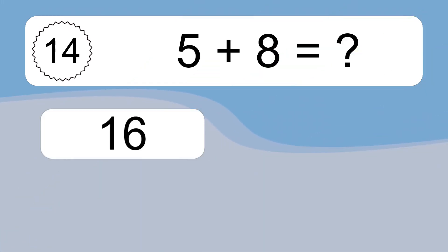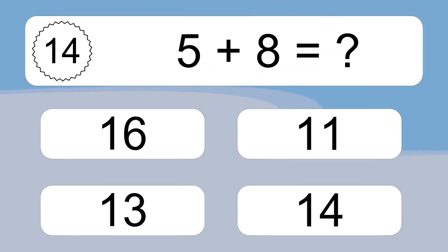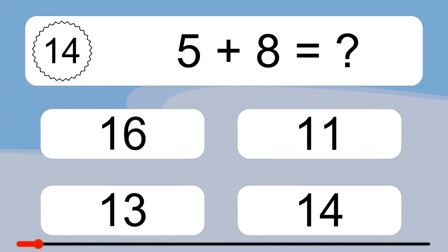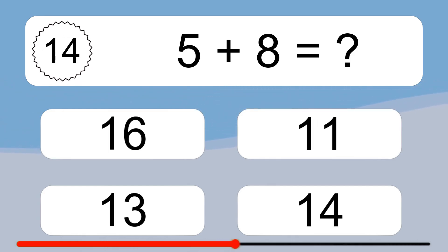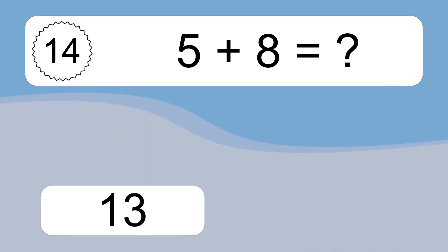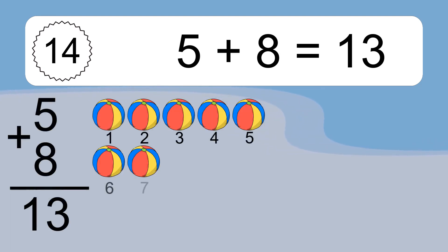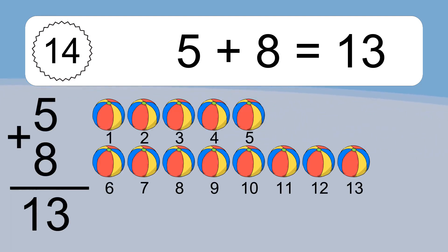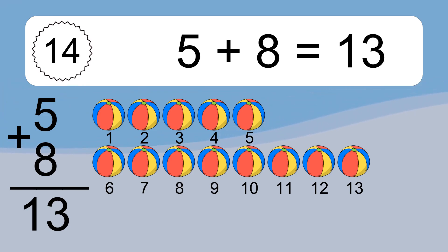5 plus 8 equals what? 5 plus 8 equals 13. Let's count it. 1, 2, 3, 4, 5, 6, 7, 8, 9, 10, 11, 12, 13.